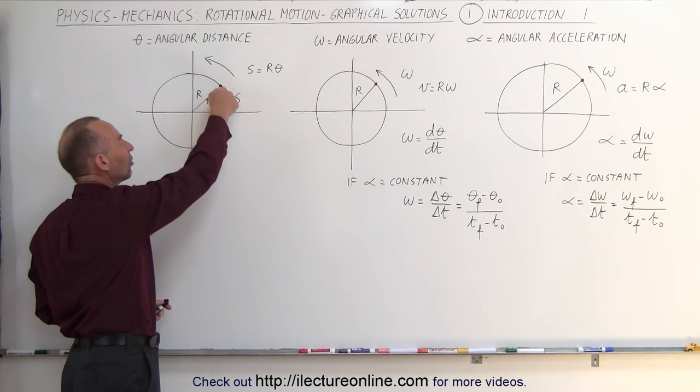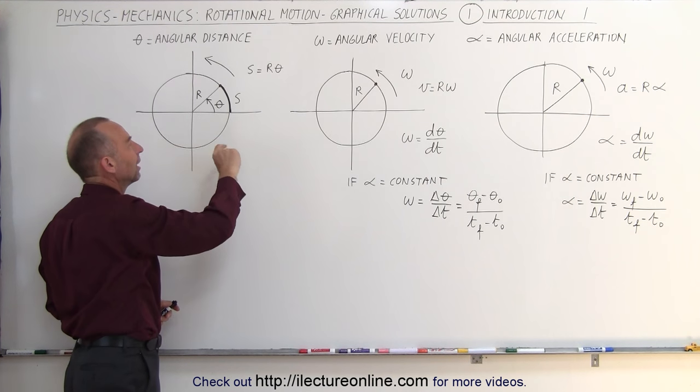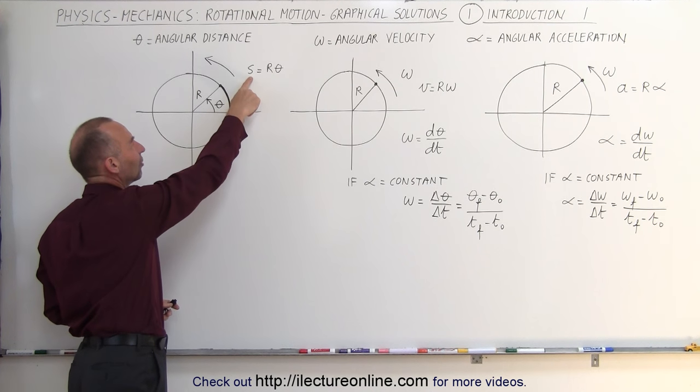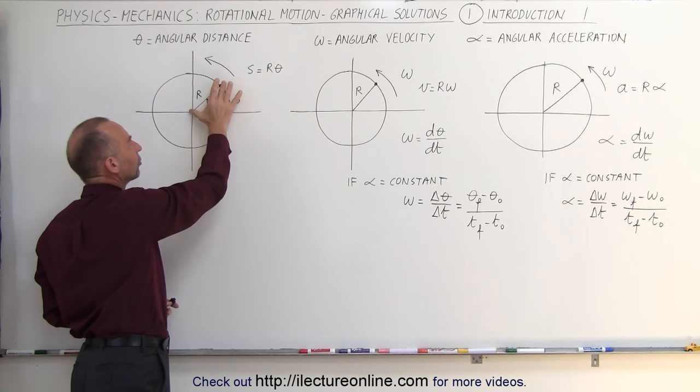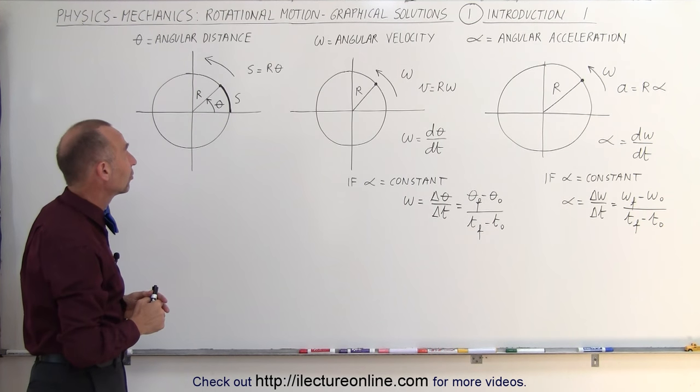S is the distance along the tangent, along the edge of the circle that the object has moved. And we can then see that s, the distance or arc length, is equal to the radius r times the angle theta. The angle theta needs to be in radians.